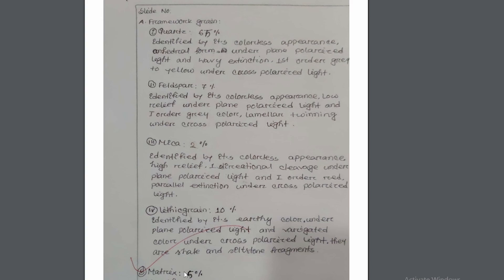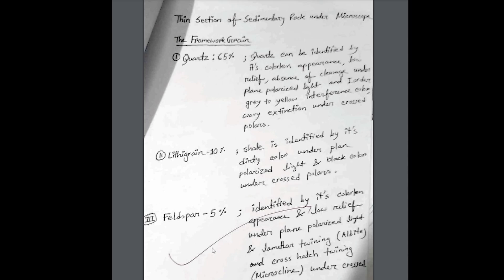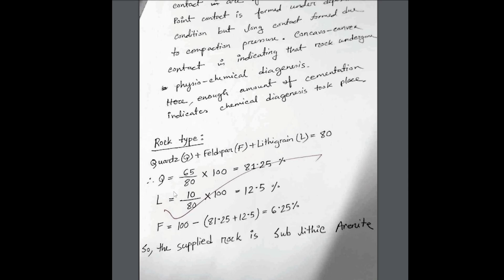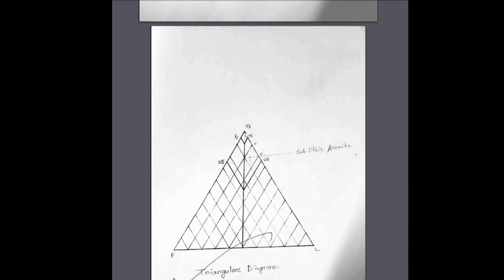You can also estimate the percentage of framework grains. For example, quartz 65%, lithic grains 10%. Observe the whole slide under the microscope and estimate the quartz percentage and lithic grain percentage, then add all framework grain percentages — for example, 80% total. Convert each mineral grain percentage into 100%: in that case, quartz is 81.25%, lithic grains are 12.5%, and feldspar is 6.25%. Then plot it in a triangular diagram called the QFL diagram, where quartz is 100% on one apex and feldspar is 100% on another. After plotting, you can see the classification result.